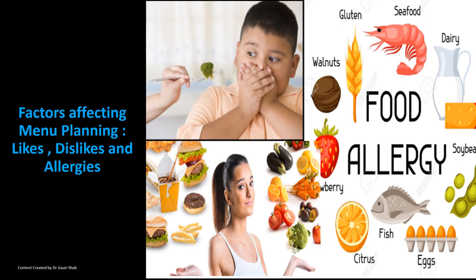Last but not the least, likes, dislikes, and allergies of the consumer. We need to keep in mind common allergies like gluten, nuts, dairy, seafood, and eggs. At the same time, we need to keep in mind common likes and dislikes — spinach and bitter gourd are not liked by the majority, while cheese, cream, and sugar are liked by the majority. This makes it easier to offer even choices within courses for all sorts of consumers, keeping every consumer happy, ensuring nobody leaves hungry, and generating repeated business.